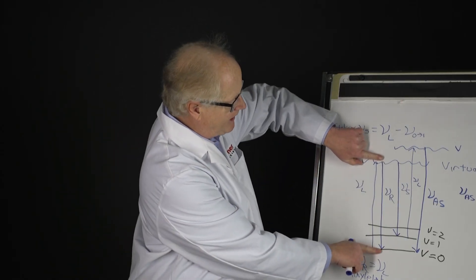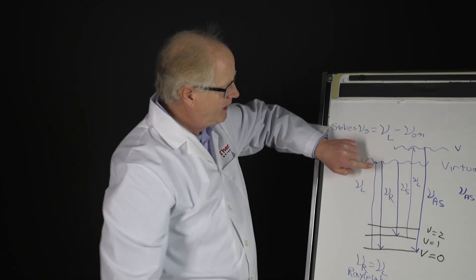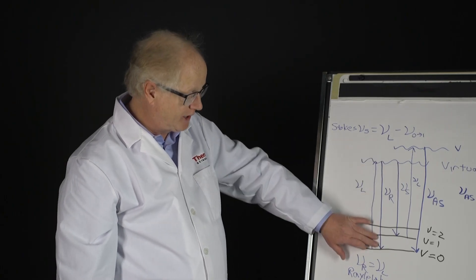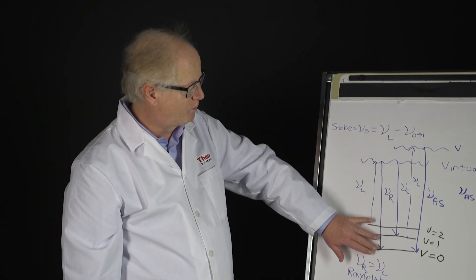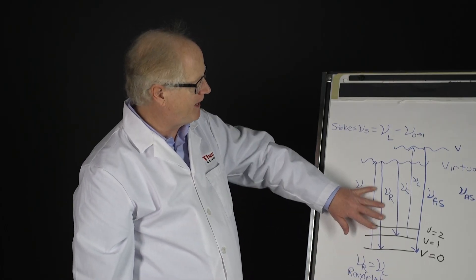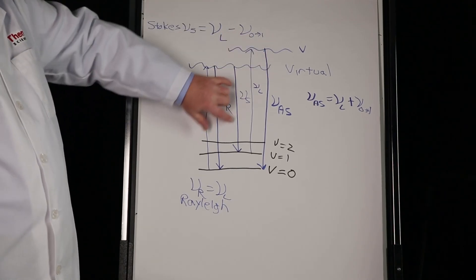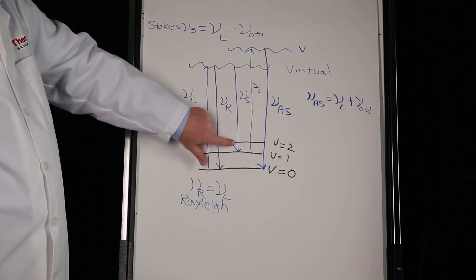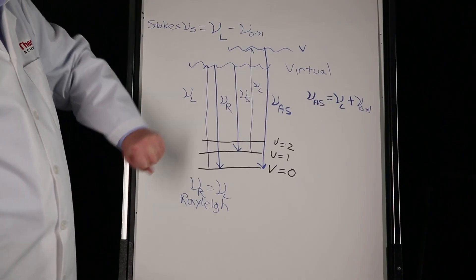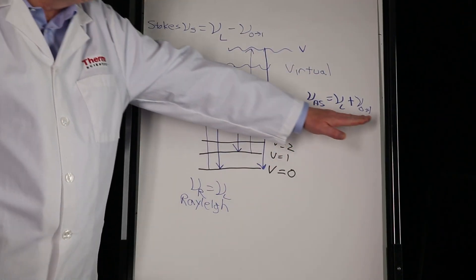So you can see these are the three standard Raman events. The Rayleigh scatter, in which case no energy is interchanged—the photon in is the photon out—as we'll see as we go on, this is an extremely intense photon and can actually cause some problems because it's so bright, so intense that it can actually damage the detector if we don't do something about it. The Stokes photon is going to be by far and away the most common that we're going to look at, where some of the energy has been removed from the laser and that energy is equal to this vibrational excitation.